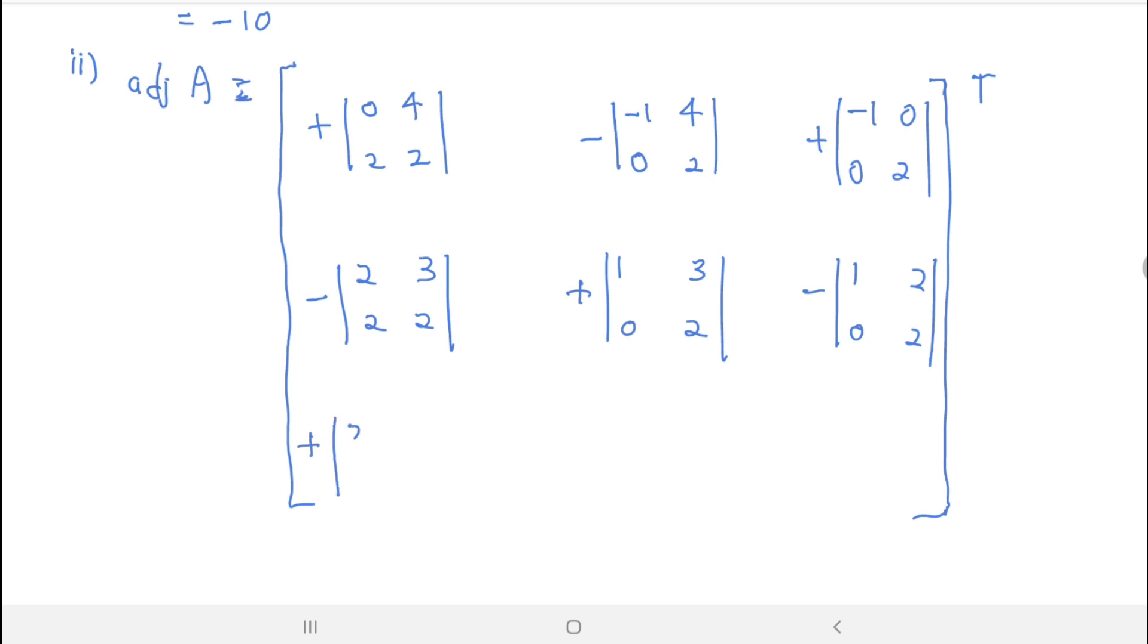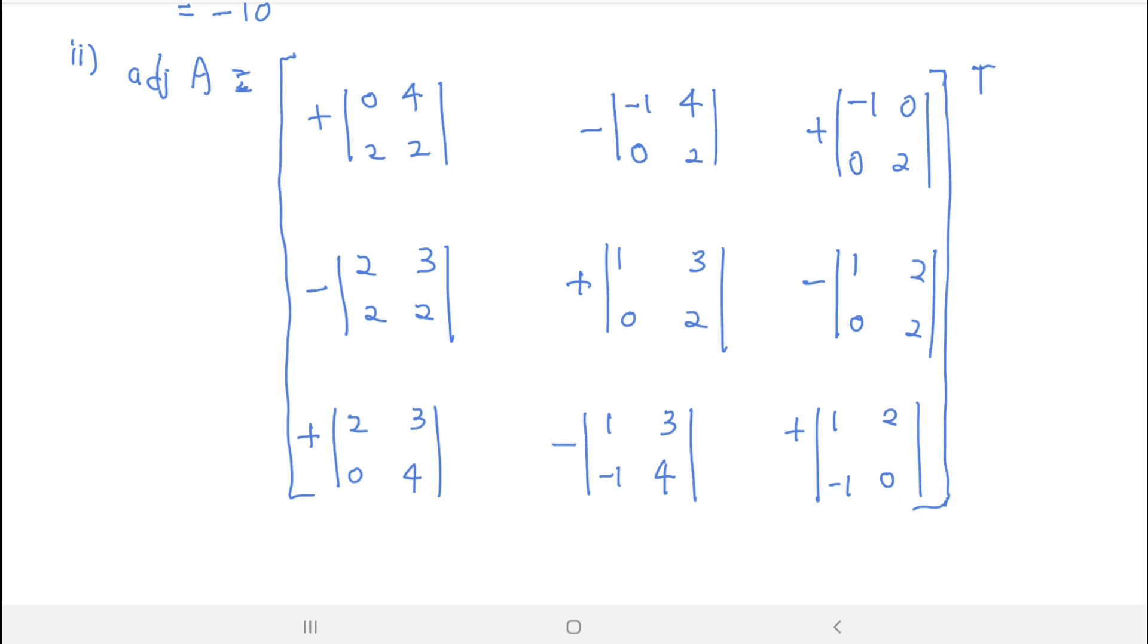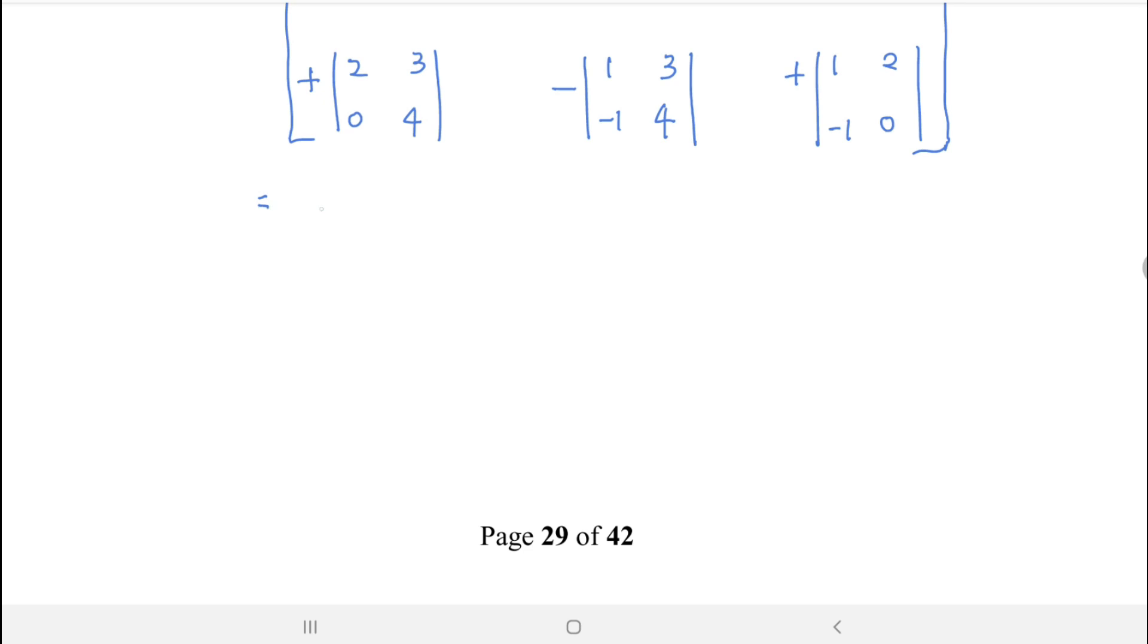And then for the third row: plus 2, 3, 0, 4; minus 1, 3, negative 1, 4; and plus 1, 2, negative 1, 0. And then you solve, you calculate everything, you will get negative 8, 2, negative 2, 2, 2, negative 2, and 8, negative 7, 2.